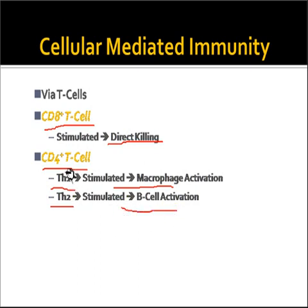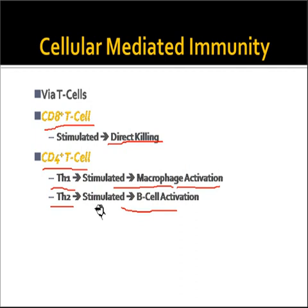TH1 cells stimulate the immune pathway by activating macrophages, whereas TH2 cells activate immune response by activating B cells — converting them into plasma cells — and then further going through the pathway of humoral immunity.